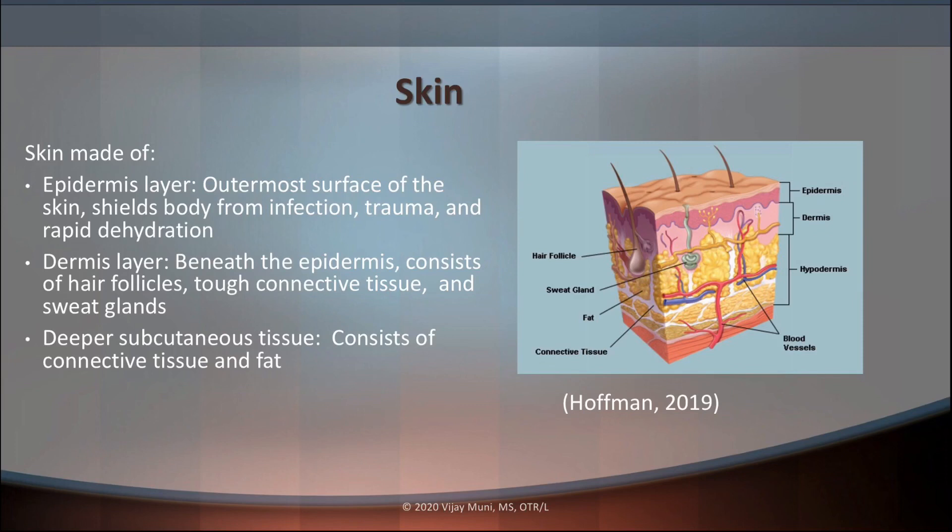For example, with the epidermis layer, it's the outermost surface of the skin which shields our body from different infections, trauma, and rapid dehydration as we're out in the sun. The dermis layer, which is right underneath the epidermis, consists of our hair follicles, tough connective tissue, and sweat glands.